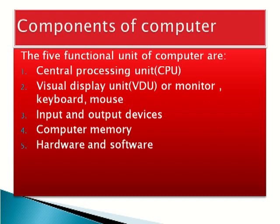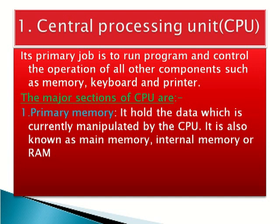Components of computer. There are five functional units of computer: CPU, VDU, input and output devices, computer memory, and hardware and software. CPU or the central processing unit: its primary job is to run programs and control the operation of all other components such as memory, keyboard, and printer. Please remember, a program under execution is known as a process. There are three major sections of CPU: primary memory, arithmetic and logic unit, and control unit.